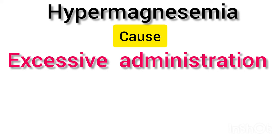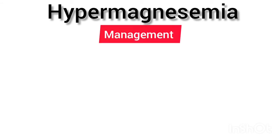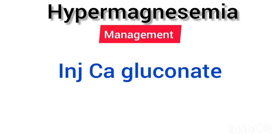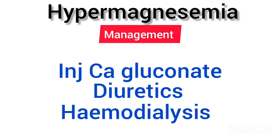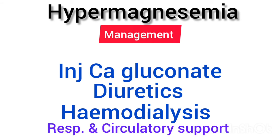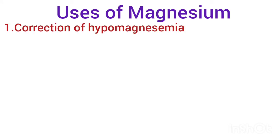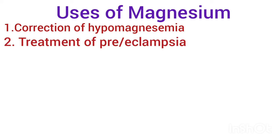Management of hypermagnesemia includes administration of calcium gluconate followed by diuretics. If this does not resolve the problem, hemodialysis may be needed, along with appropriate respiratory and circulatory support and correction of the underlying cause.